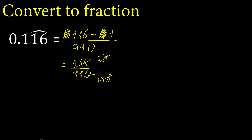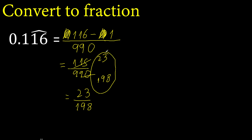Divided by 23 is 1. Divided by 23 — there is not an exact result, therefore here it is finished. Cannot be simplified, cannot be.